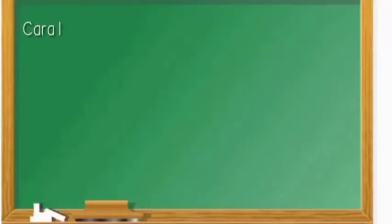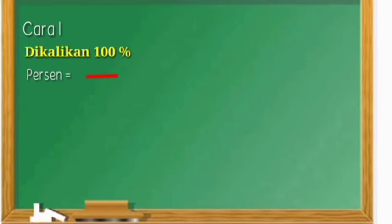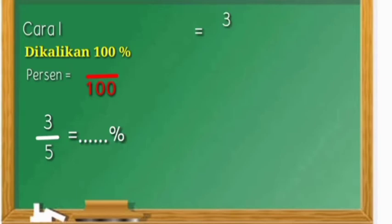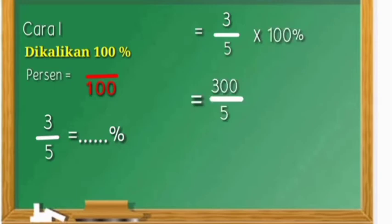Cara yang pertama: dikalikan 100 persen. Persen artinya perseratus. Contoh: tiga per lima berapa persen? Maka, tiga per lima dikali seratus persen. Tiga kali seratus sama dengan tiga ratus, dibagi lima. Tiga ratus dibagi lima sama dengan enam puluh persen.